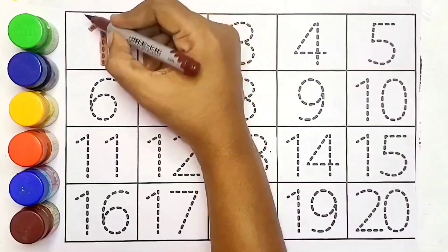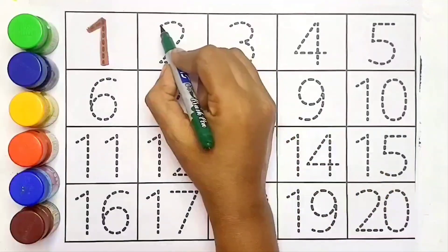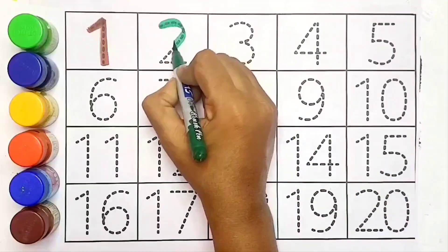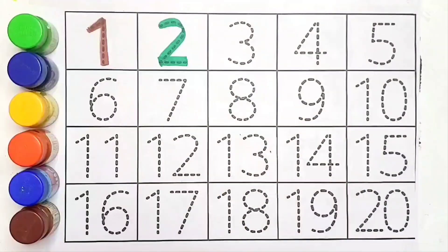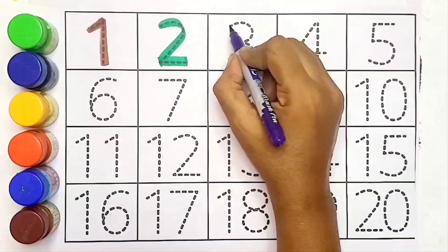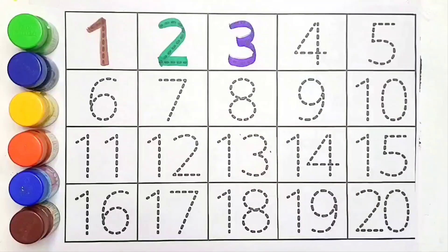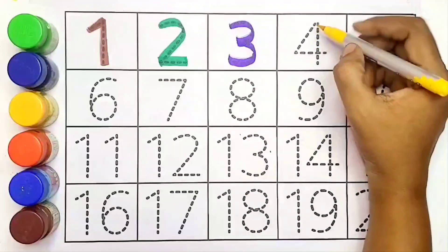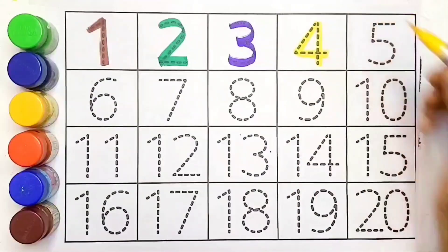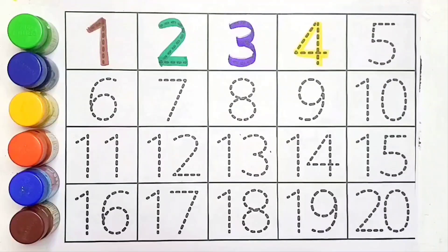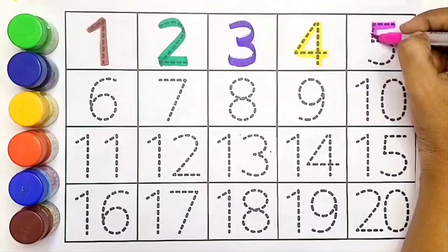One, O-N-E-1. Two, T-W-O-2. Three, T-H-R-E-E-3. Four, F-O-U-R-4. Five, F-I-V-E-5.